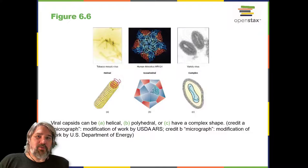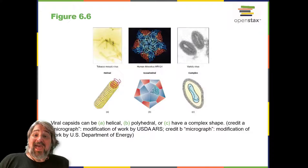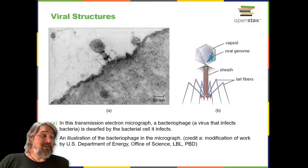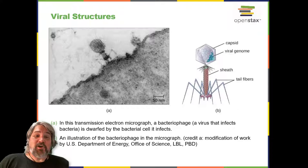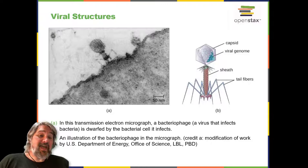Both helical and polyhedral viruses can have envelopes. Viral shapes seen in certain types of bacteriophages, such as T4 phage, and poxviruses, like vaccinia virus, may have features of both polyhedral and helical viruses, so they are described as complex viral shapes. In the bacteriophage complex form, the genome is located within the polyhedral head, and the sheath connects the head to the tail fibers and tail pins that help the virus attach to receptors on the host cell's surface. Poxviruses with complex shapes are often brick-shaped with intricate surface characteristics.